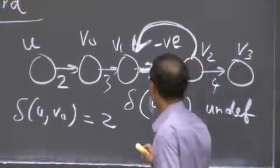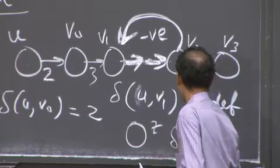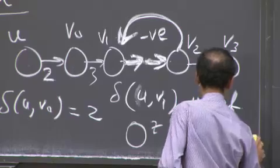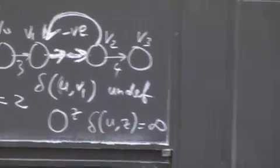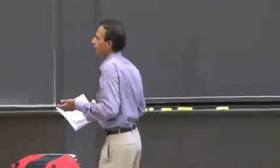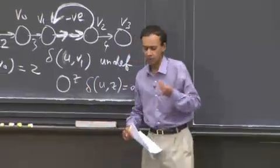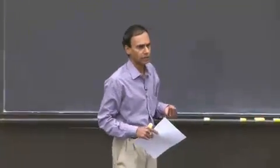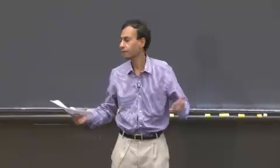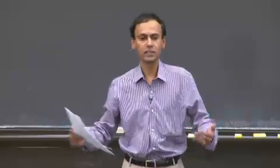For a node v0 not on the cycle, we have delta(u, v0) equals 2, and there's a simple path of length 1 that gets you from u to v0 without encountering a negative cycle. And if you have a vertex z that can't be reached from u, then delta(u, z) is infinity. At the beginning of these algorithms, the source has shortest path weight 0, all others are infinity. Some will stay infinity, some will obtain finite shortest path weights, and some will be undefined if the graph has negative cycles.